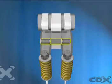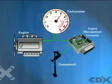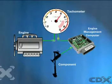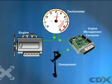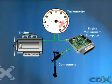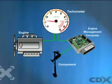Throttle-less valve control engines do not use a throttle butterfly to control engine power. Instead, intake valve lift is controlled to between 0 and 10 mm, or 0.39 of an inch, by the engine management computer.